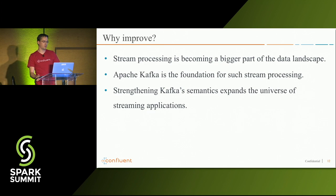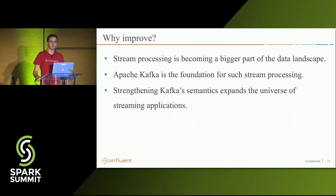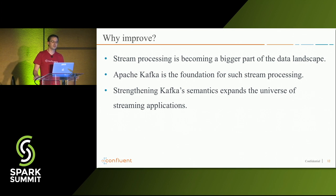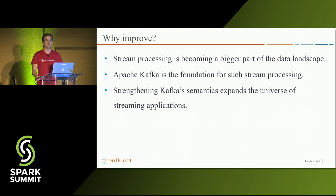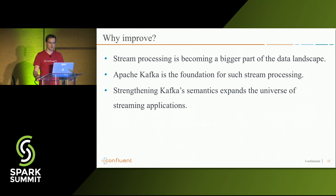So why do we need to improve this? Stream processing is becoming a bigger part of the data processing landscape. Mission-critical applications are being built across all kinds of industries, and the demand for exactly-once is growing. Because Apache Kafka is a de facto standard for data stream processing, it's important for Kafka to have stronger guarantees. This also expands the universe of streaming applications — for example, in finance, duplicate writes or reads are really non-acceptable.